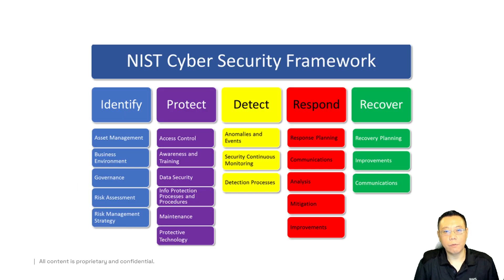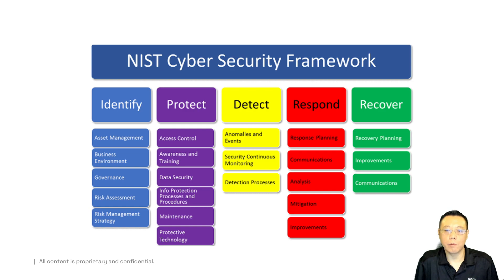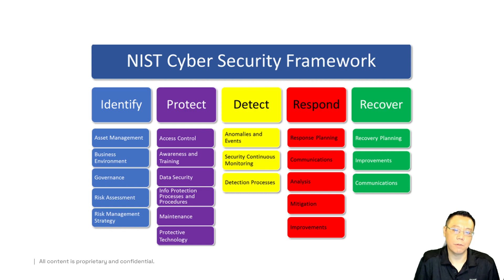The NIST cybersecurity framework — identify, protect, detect, respond, and recover — all have different workstream requirements. We have different inventorying, just like we did with migration patterns. When you move into AWS, you also want to protect these items with preventive-based controls. You have detective-based controls, and you need to be able to respond to them accordingly in a timely fashion, and also be able to recover from any kind of cybersecurity attacks.